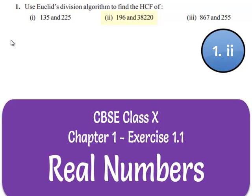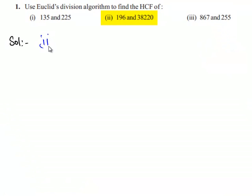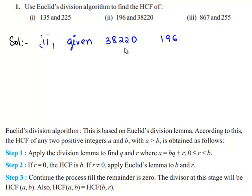Now let us move on to the second bit. The given two numbers are 38,220 and 196. Clearly 38,220 is greater than 196.